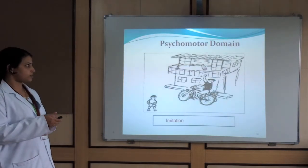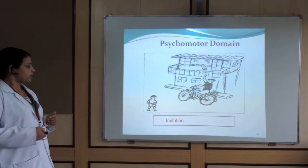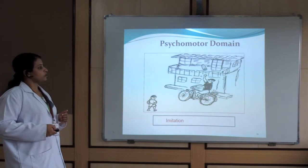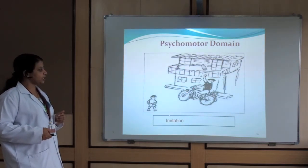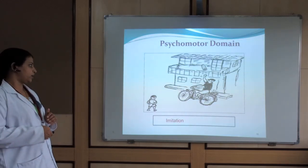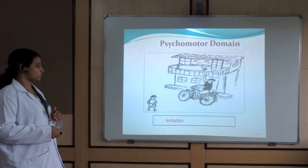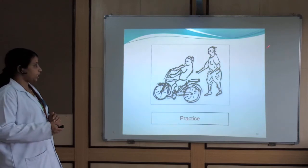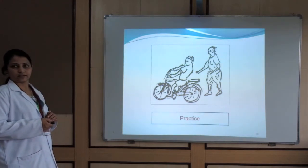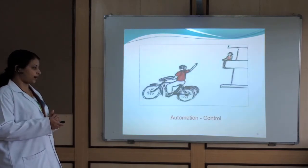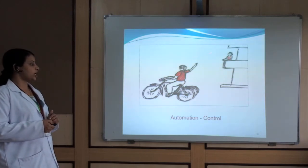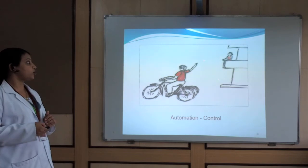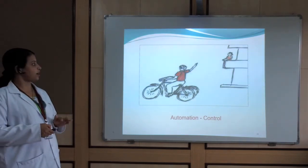Routine examples of psychomotor domain: Level 1 — imitation: a boy is observing how the newspaper man throws the newspaper while balancing the bicycle. He is observing, imitating — only observation, not yet doing. Level 2 — practice: in the presence of an expert, he is practicing. Level 3 — automatism: because of repeated practice, he gains control and can perform all the skills independently — the highest level of psychomotor domain.